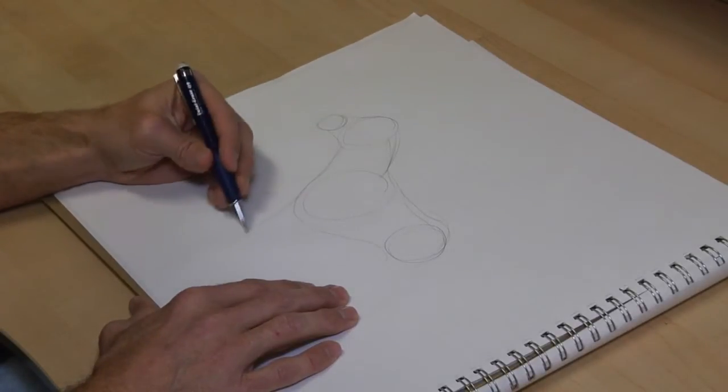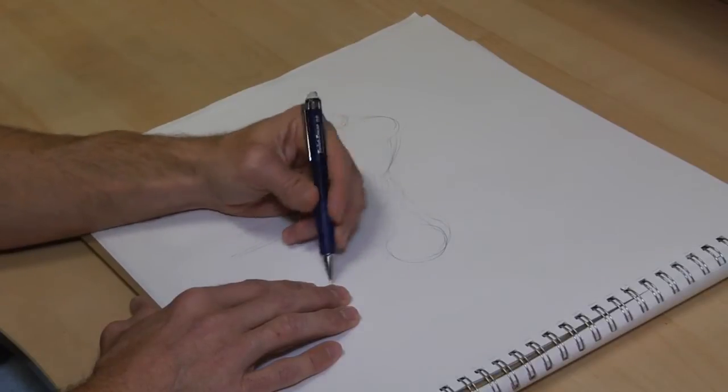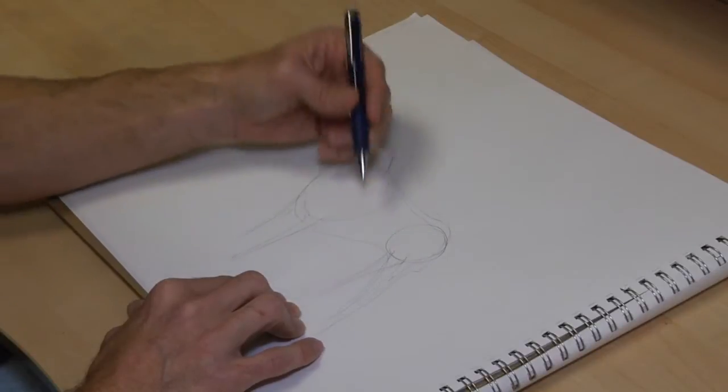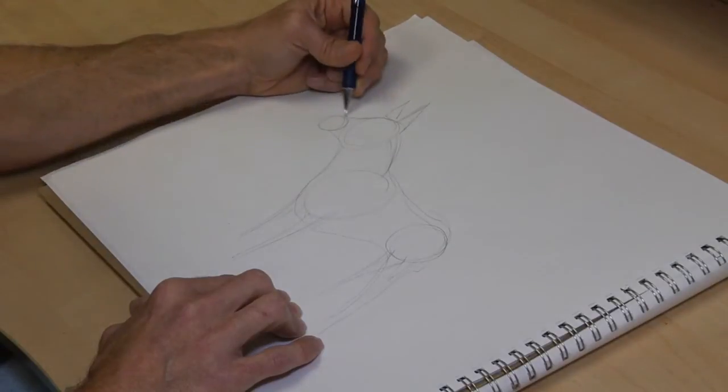He has four legs, so we'll do one leg, two legs, coming off the shoulder. The rear legs. Ears. German Shepherd has pointy ears. They're going to be like two triangles on his head. Come down.